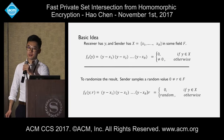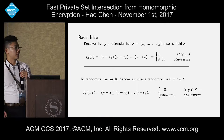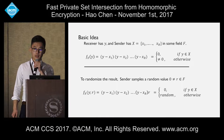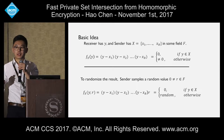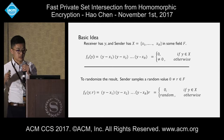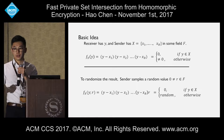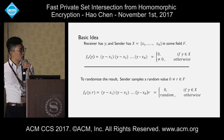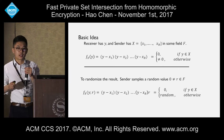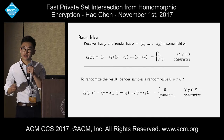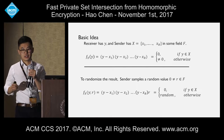Let me introduce the basic idea of our private set intersection based on homomorphic encryption. In the simplest setting, suppose the receiver only has a single item in its set, and the sender has a set of B items from X1 to XB, assumed to be in some finite field F. You can evaluate a polynomial which is just a product of the differences, and it will be zero if Y is in the set X, and non-zero otherwise.